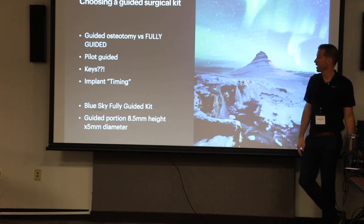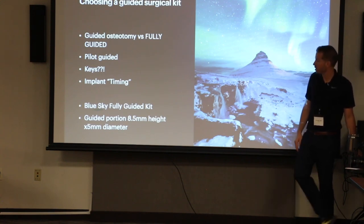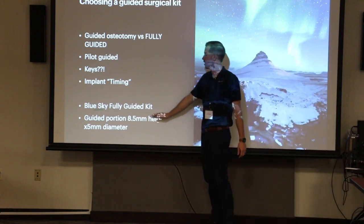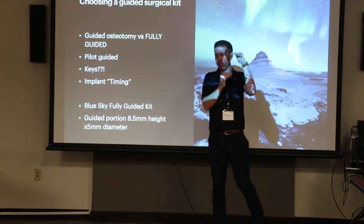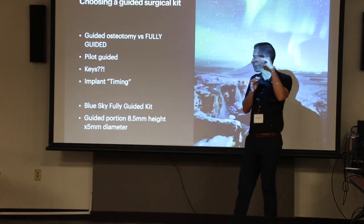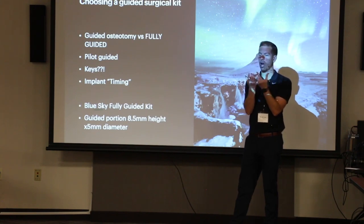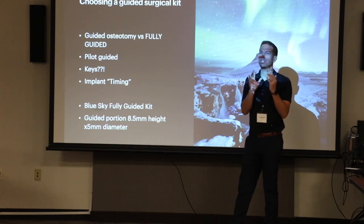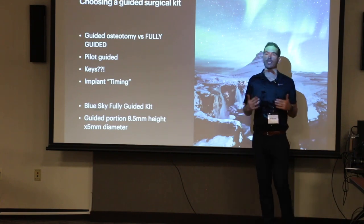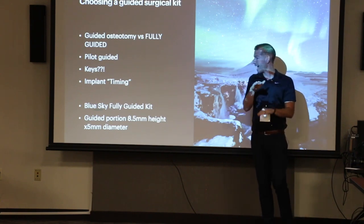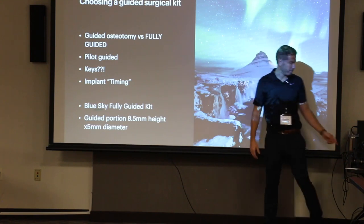So we use the Blue Sky fully guided kit. We have it in the back, I'm going to walk through it here. I want these two dimensions to sink in. One is the length - 8.5 millimeters in length. And the cylinder on these drills is five millimeters in diameter. So those are two really important dimensions that you need to remember, because as we go into the software and plan, we're going to be using these numbers. 8.5 is the height of this guided portion and five is the diameter.